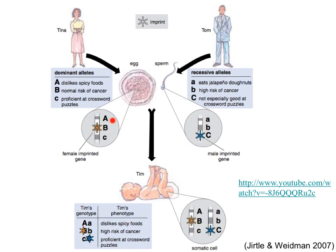If a baby is the combination of two eggs, it would only have epigenetic marks from the female side and would lack the gene that promotes growth. If a baby is the combination of two sperm, it would lack the gene promoting accelerated development, so the baby would grow with no actual development plan. For more information about genomic imprinting, check out the supplementary video posted on Blackboard.